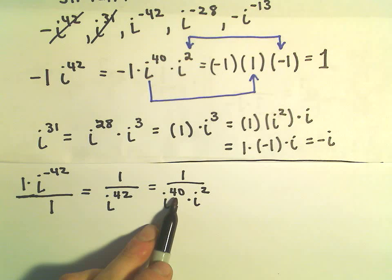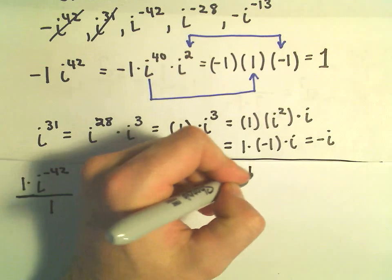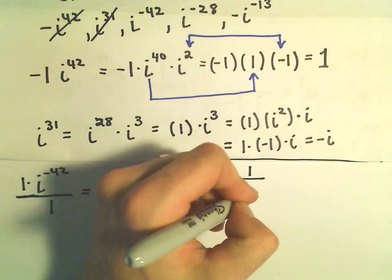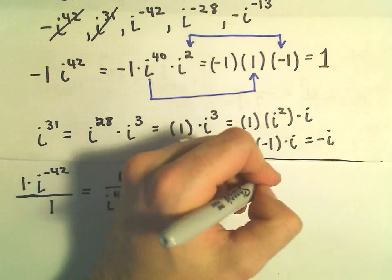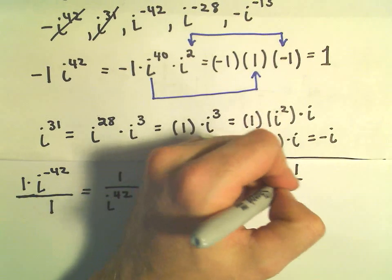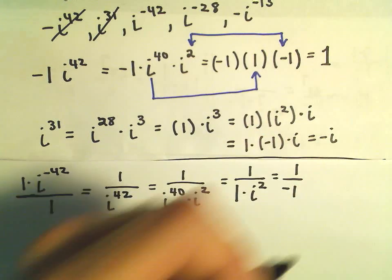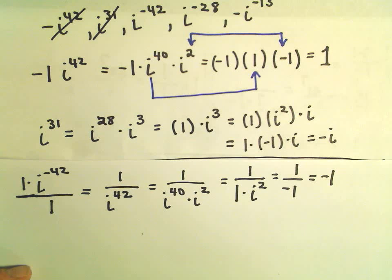So again, i to the 40th, since it's a multiple of 4, that's just simply going to give us 1. And then I can rewrite i squared. We know that i squared is negative 1. So we have 1 over negative 1, which simplifies to just negative 1.